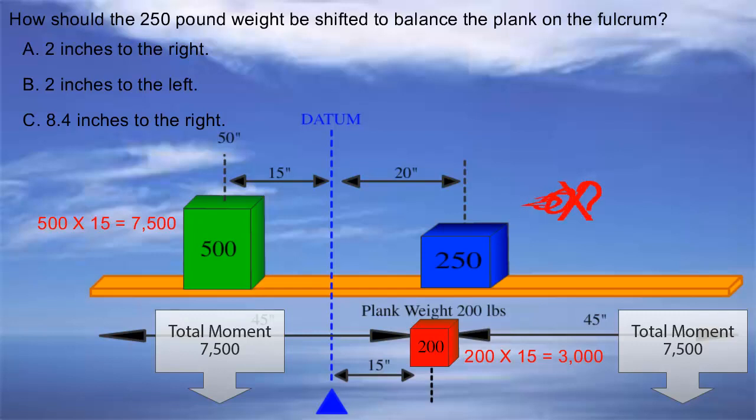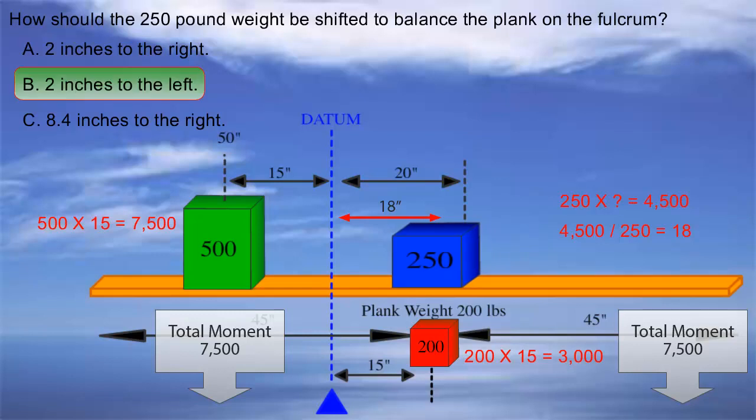Finally, let's find a number that multiplied by 250 gives us 4,500, and that will be the distance the weight to the right needs to be from the fulcrum. Like we did before, 4,500 divided by 250, 18 inches. Because the weight is 20 inches to the right, it needs to be moved 2 inches to the left. So answer B is your correct answer.